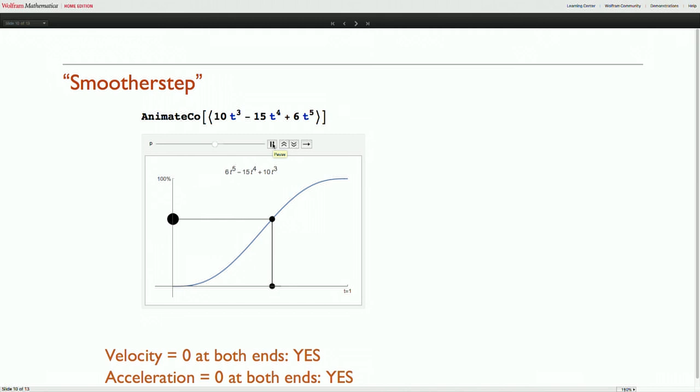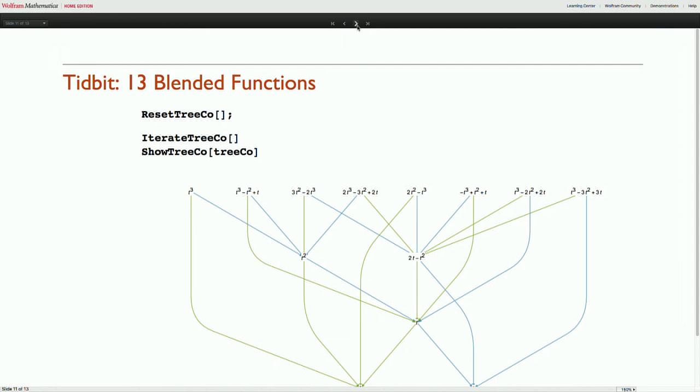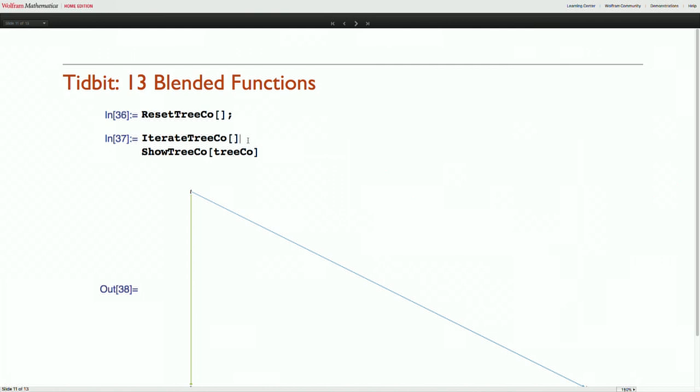And this is just from starting and ending with we want to smoothly go between different things. And you can ask what would happen if you combined more and more of these easing functions that start at zero and one. So you can start small. Here's just t from zero and one.